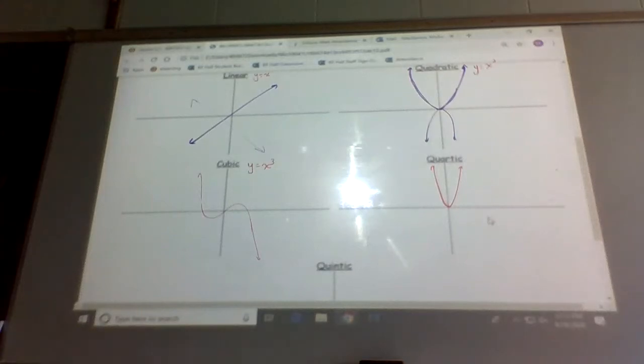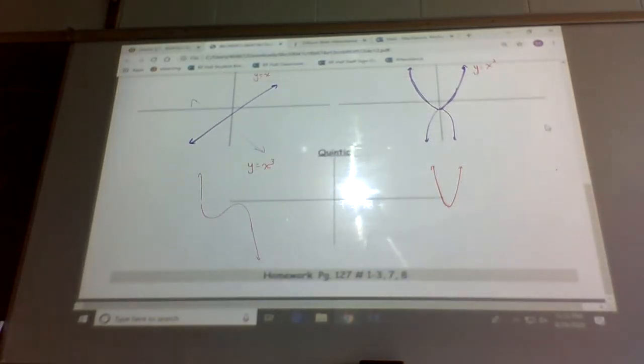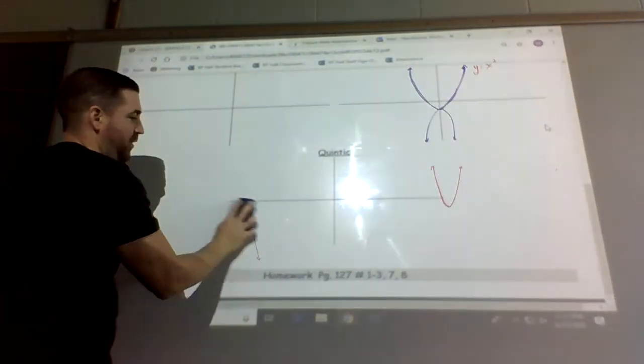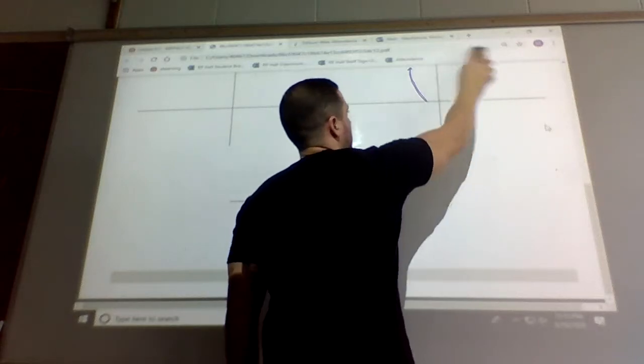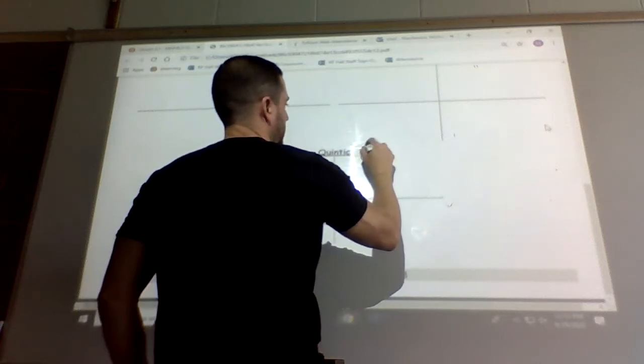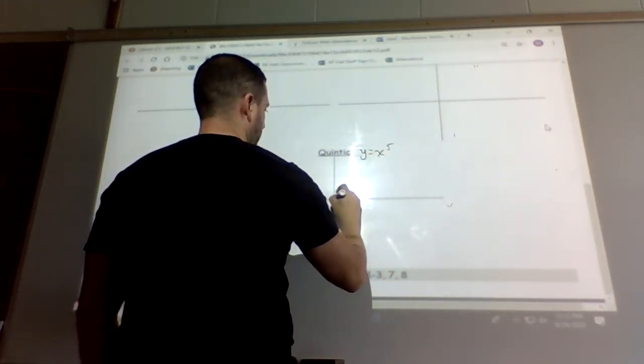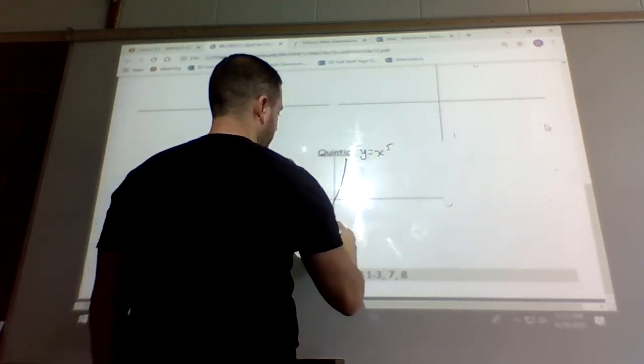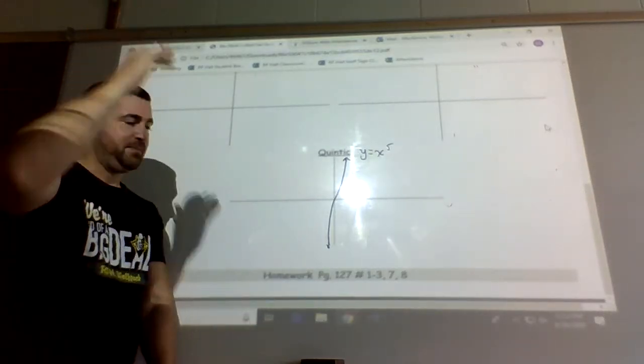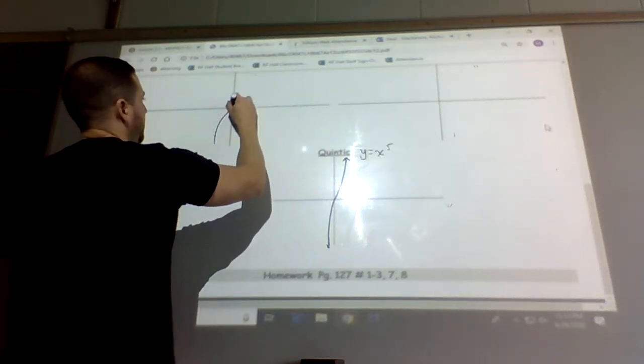And lastly, there is a quintic function. So that would be the power of 5. Quintic is the power of 5. And again, if you guessed it correctly, it looks like a cubic function. But since it is the power of 5, it grows rapidly, so maybe a little bit closer to the lines. Whereas this one maybe it could be a little bit wider.